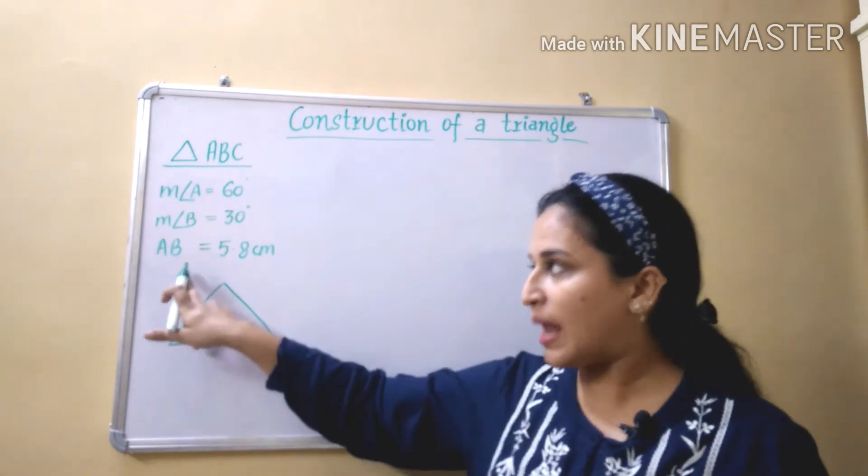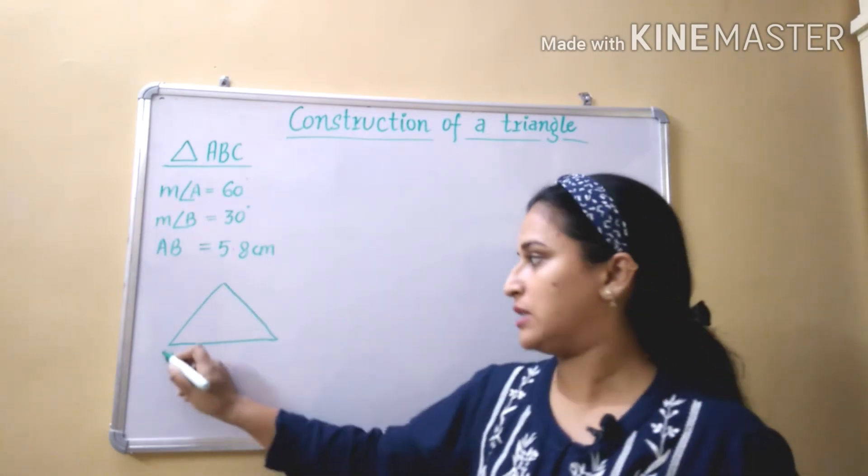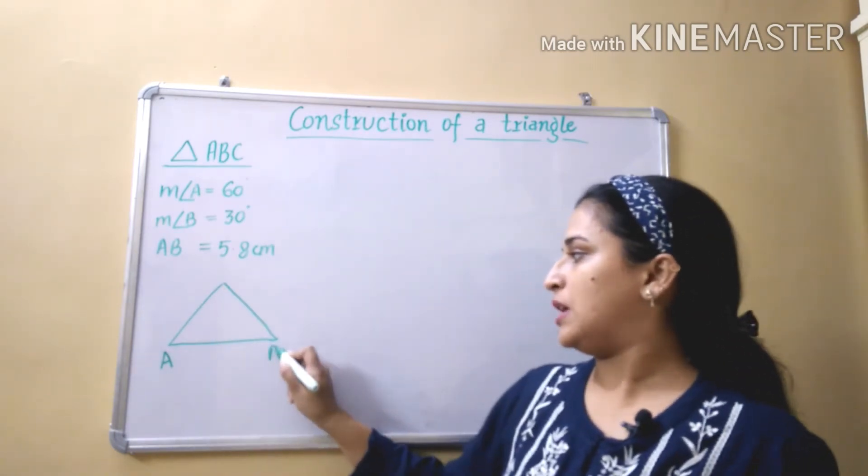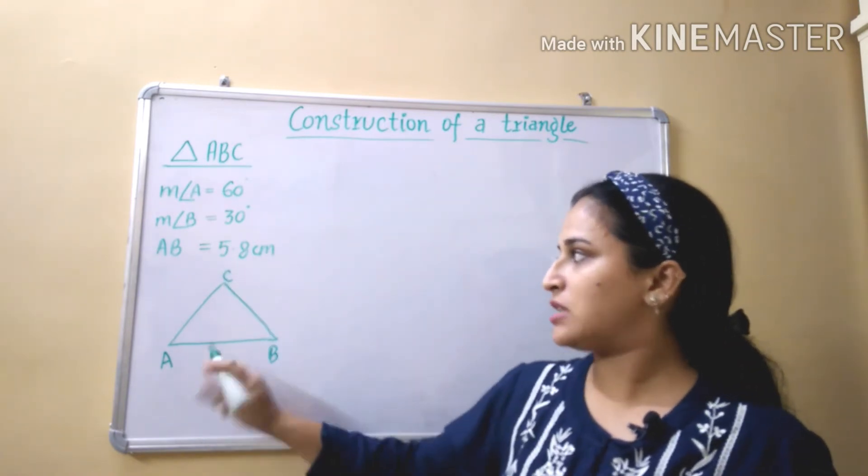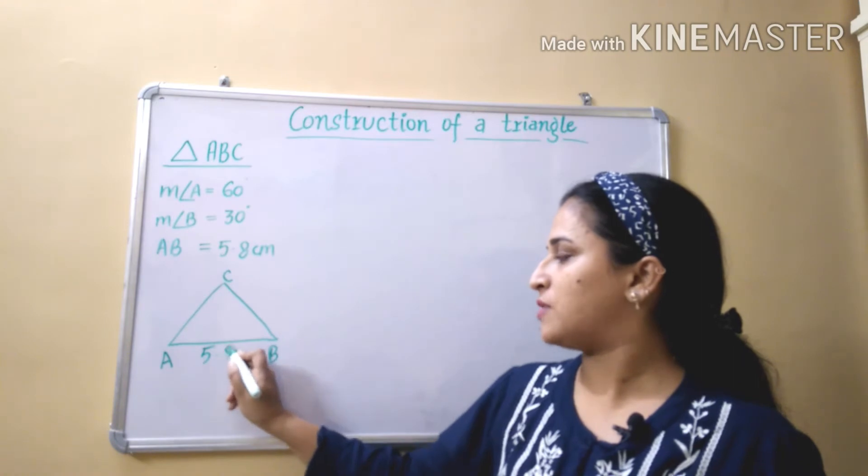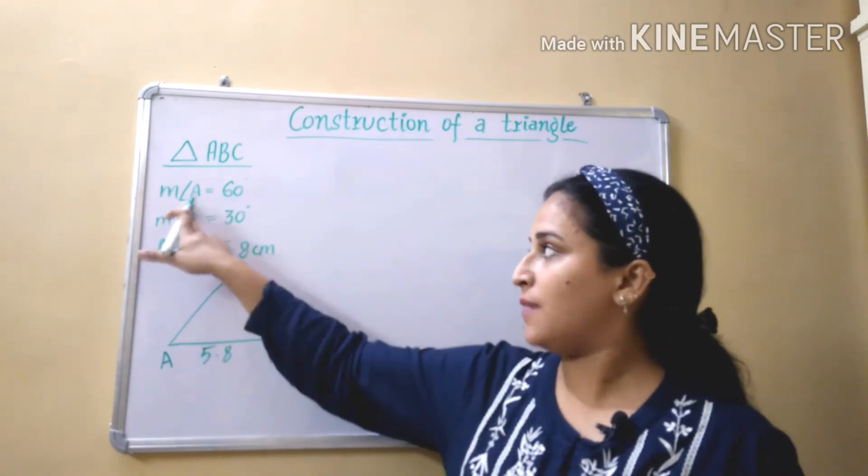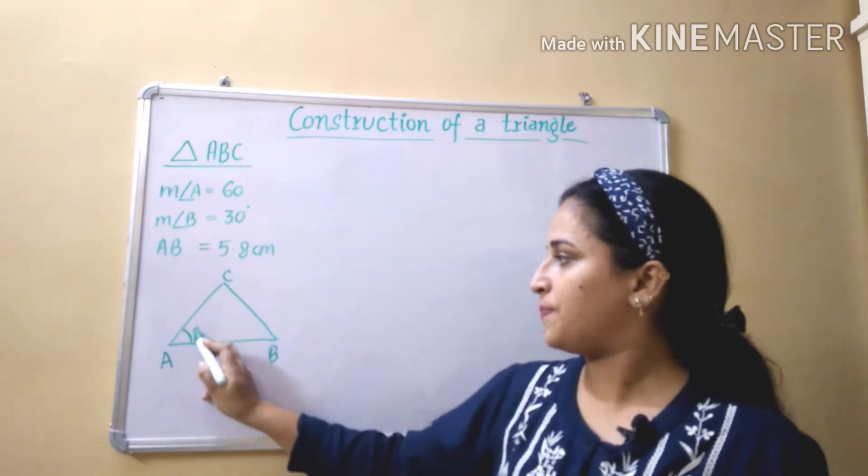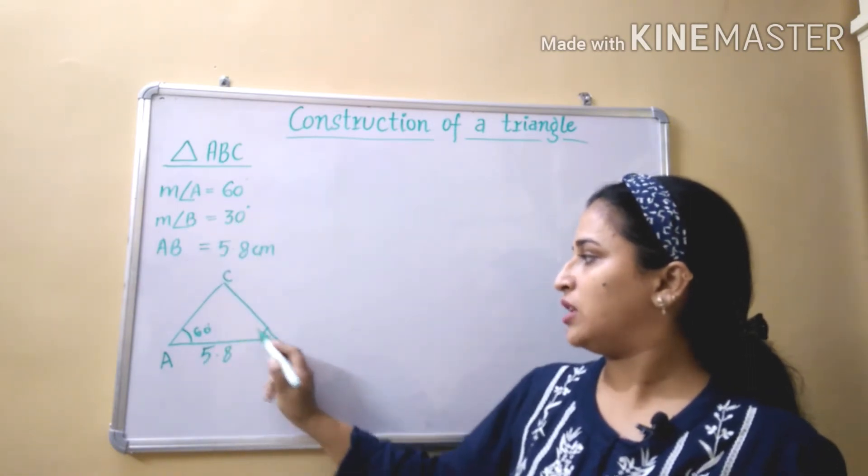So here AB is given 5.8 cm, so we have to take AB as base. A, B, and clockwise it will get C here. AB is given 5.8 cm. I am not writing units here. Angle A is given 60 degrees and angle B is given 30 degrees.